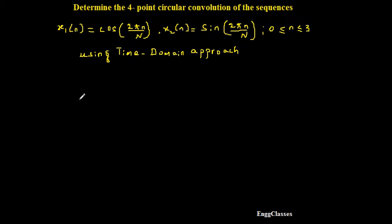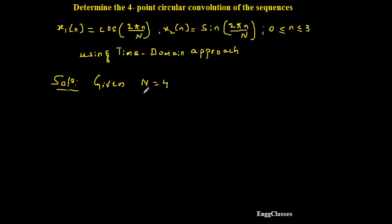So what is the output y(n) equal to? Let me start with the solution. It has been given that capital N is equal to 4 — it is a four-point DFT with n varying from 0 to 3, hence capital N must be 4. So in this expression I will put N equal to 4 and vary small n from 0 to 3, so that I can find x1(n) and x2(n) as four discrete samples.